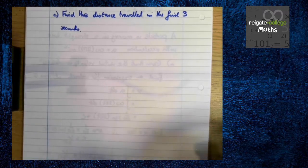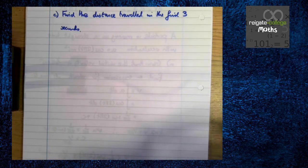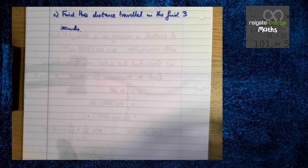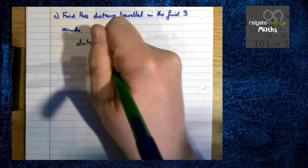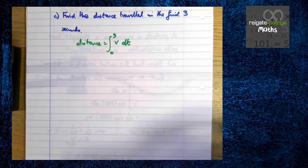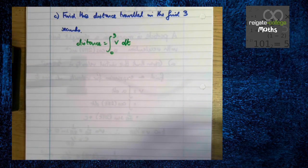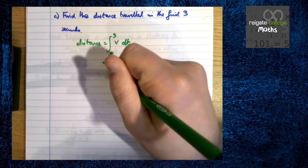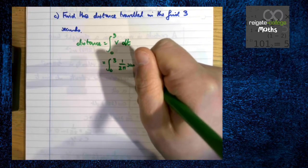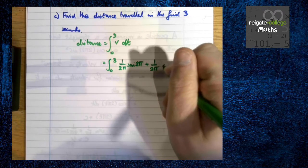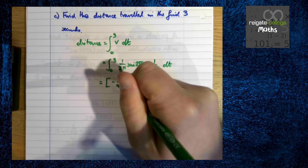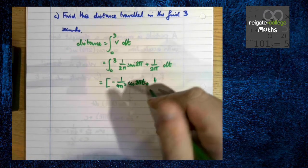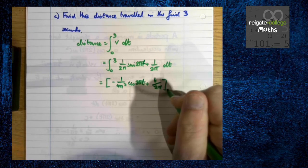So this is our last part to this example. Find the distance traveled in the first three seconds. Well we know distance and displacement are linked together. So let's think about distance. Well distance is the area under a velocity time graph. How do we find area? Well we integrate between two limits. In the first three seconds means our limits are going to be 0 and 3 and we're going to integrate v in that area. So we're going to be integrating 1 over 2π sine 2πt plus 1 over 2π. So integrating this we're going to get minus 1 over 4π squared cos 2πt plus t over 2π between 0 and 3.